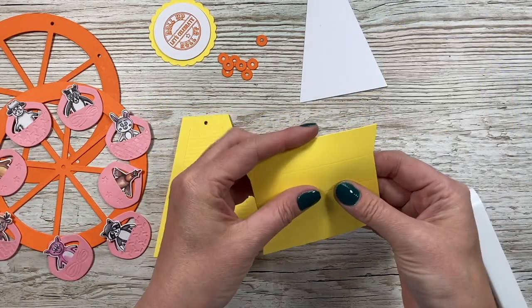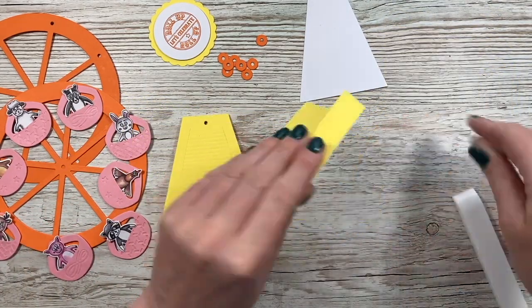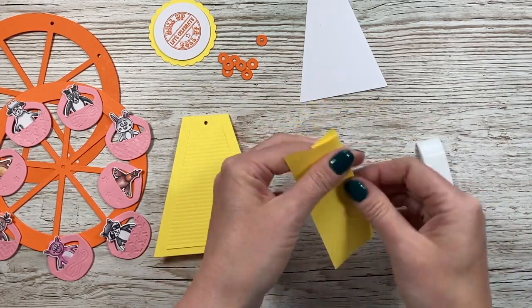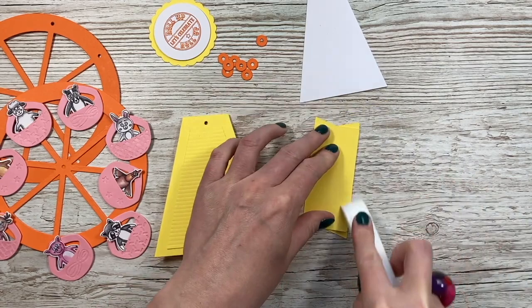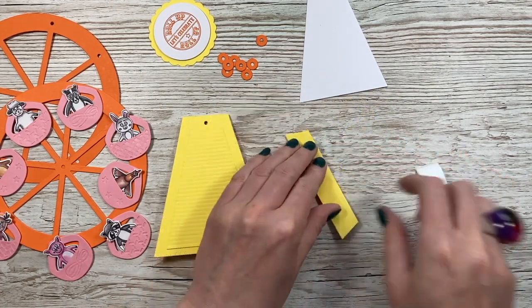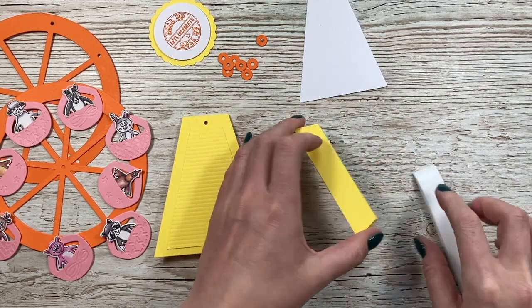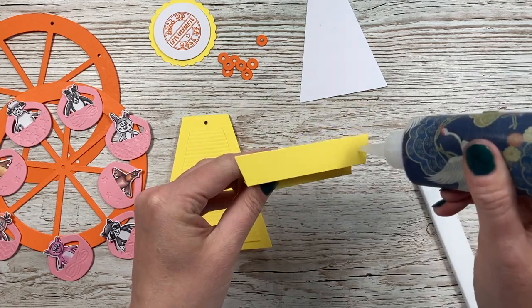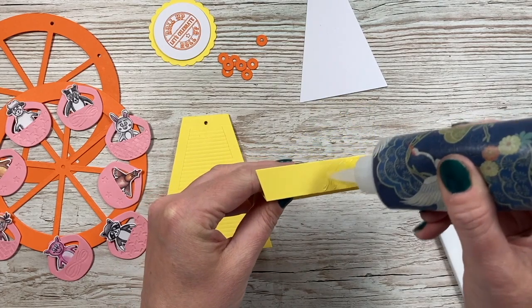Next you've got that base support. You want to do a mountain fold and a valley fold, so the middle score line will be a valley and then the two outer score lines will be mountain folds. You'll see it shaped at the same angle as the stand piece so it will hide nicely behind that.